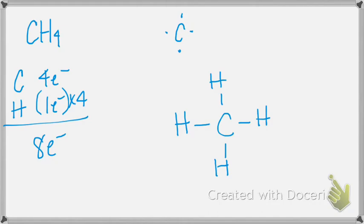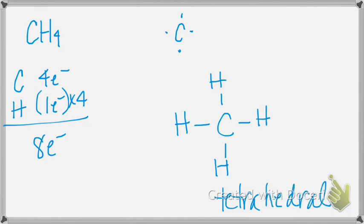So look at your chart. This atom has four things bonded to it and zero lone pairs — so it is tetrahedral. And what does it say the bond angle is for a tetrahedral structure? 109. How do we know it's tetrahedral? Look at your chart under where it says four domains: four bonded atoms and zero lone pairs, so it's tetrahedral.